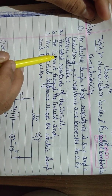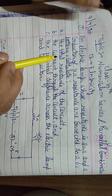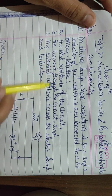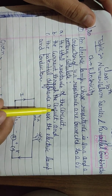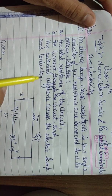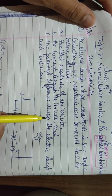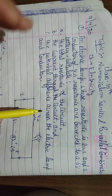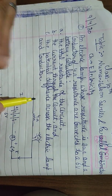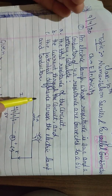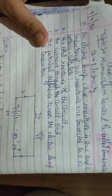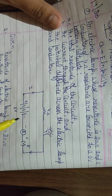What do we need to find in this question? Three things: first is total resistance, second is the current through the circuit — you have to find the current of the whole circuit — and the last one is the potential difference across the electric lamp and conductor respectively.